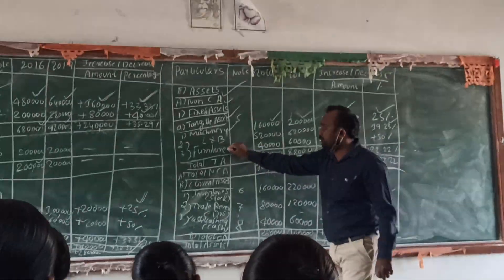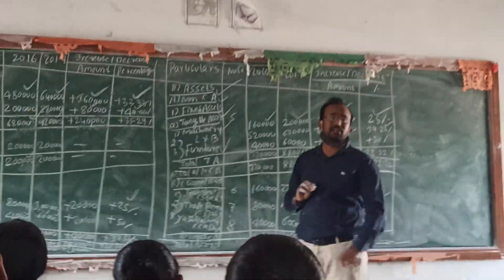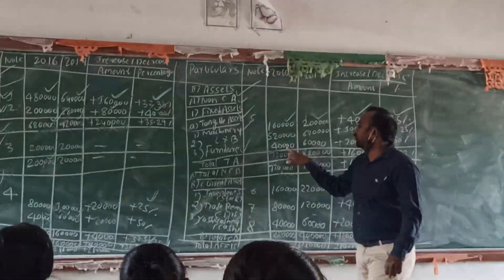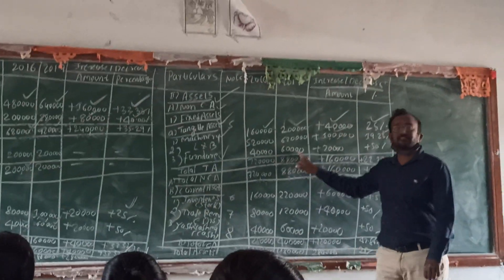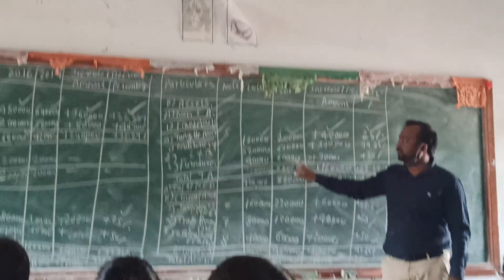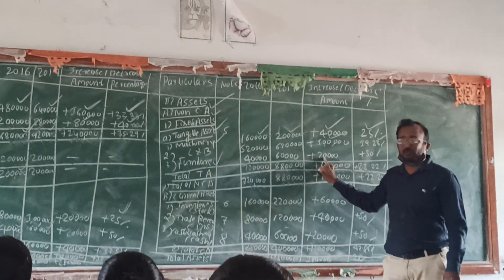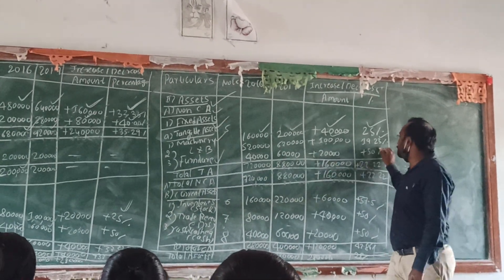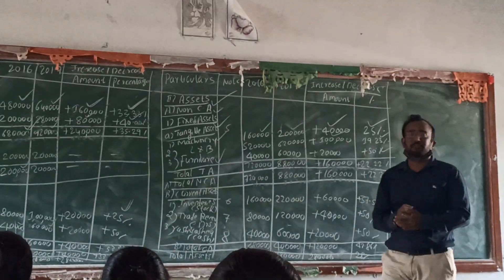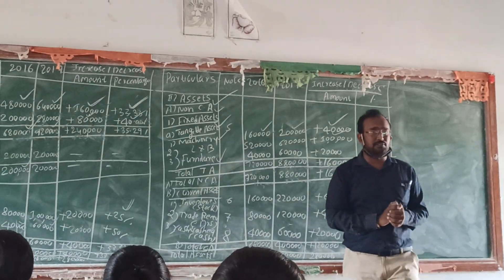Number 3 is furniture and fixture: first year is 40,000 and second year is 60,000. The difference amount is 20,000 and the percentage is 50 percent.